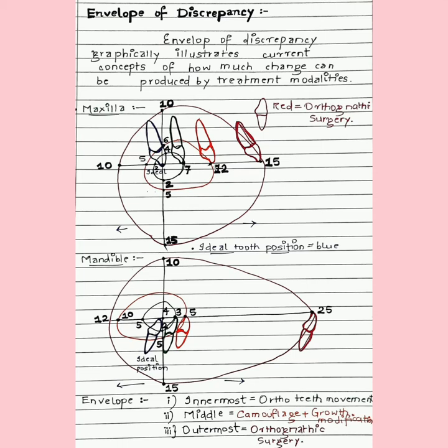The innermost circle depicts orthodontic tooth movement and camouflage treatment. The middle circle denotes growth modification, i.e. myofunctional and orthopedic appliances, and the outermost circle denotes orthognathic surgery done in severe cases in adults. These envelopes denote the treatment modalities in orthodontics.